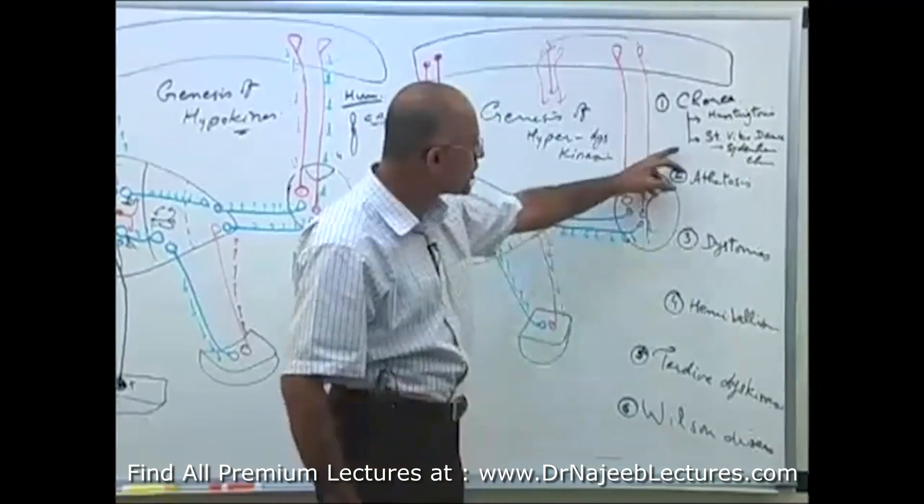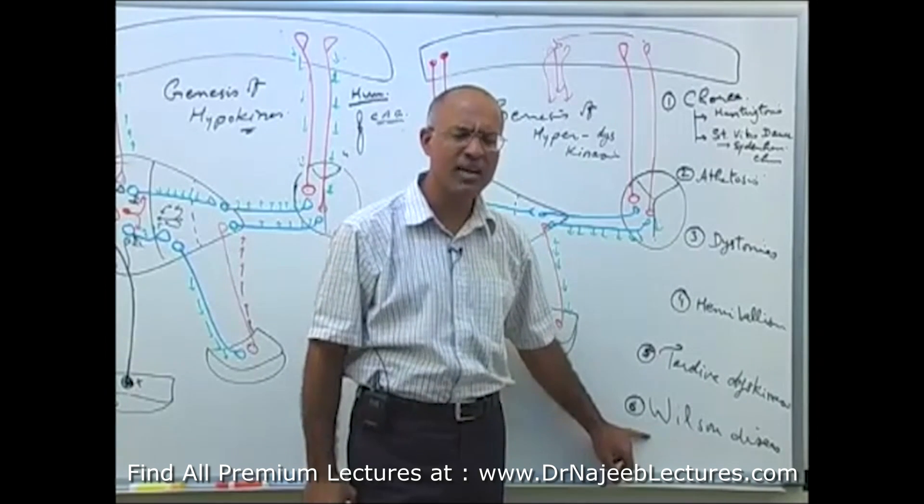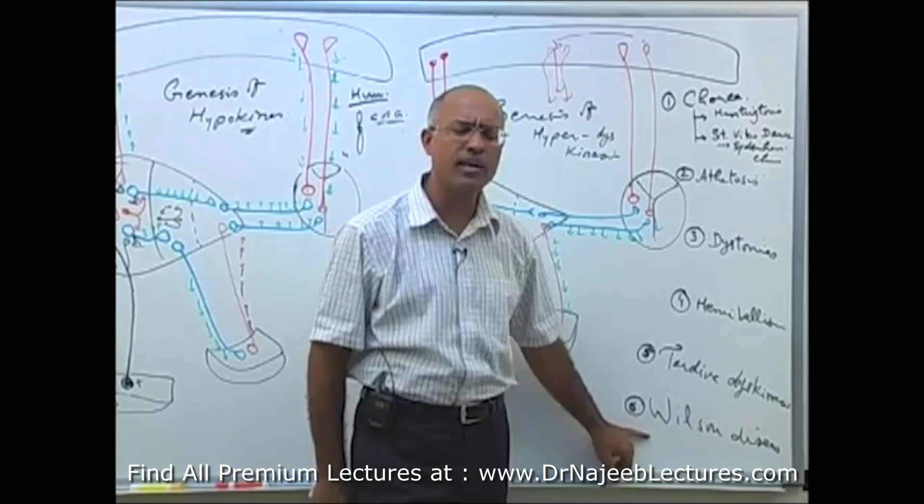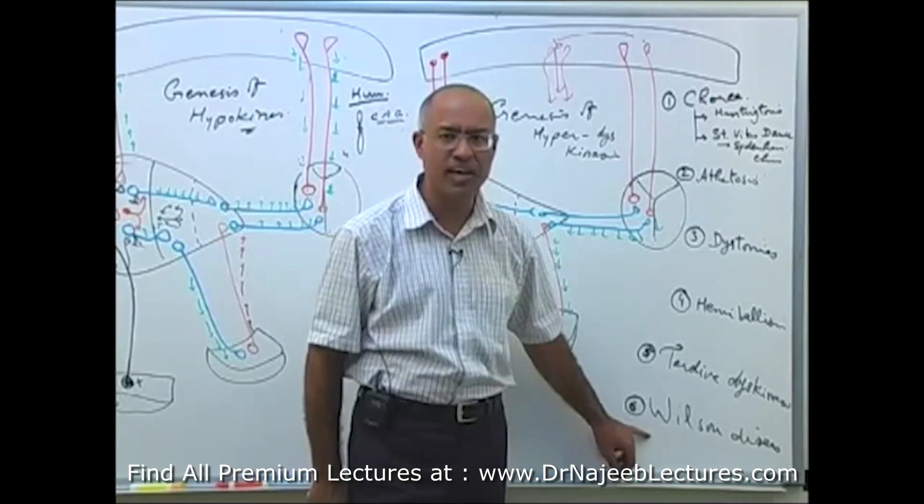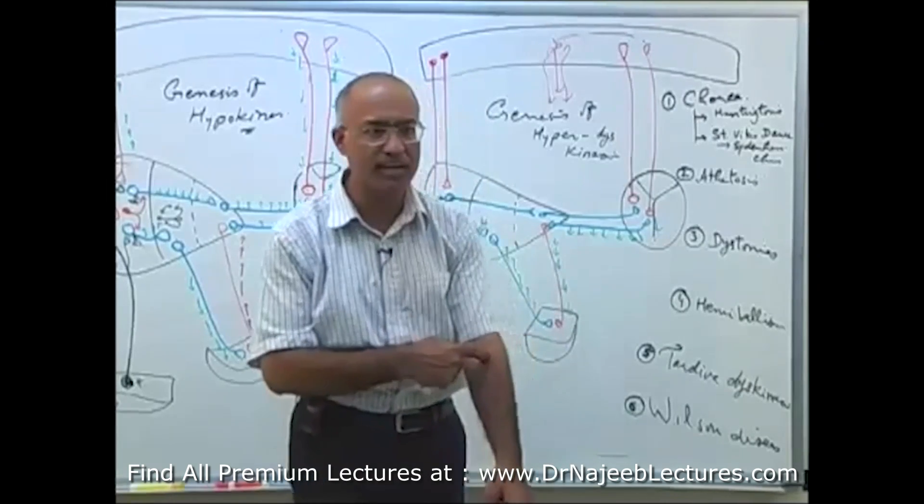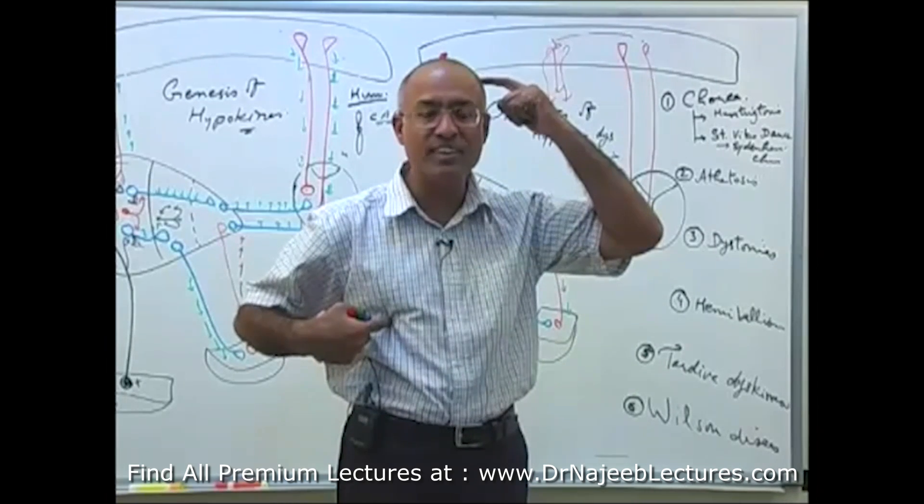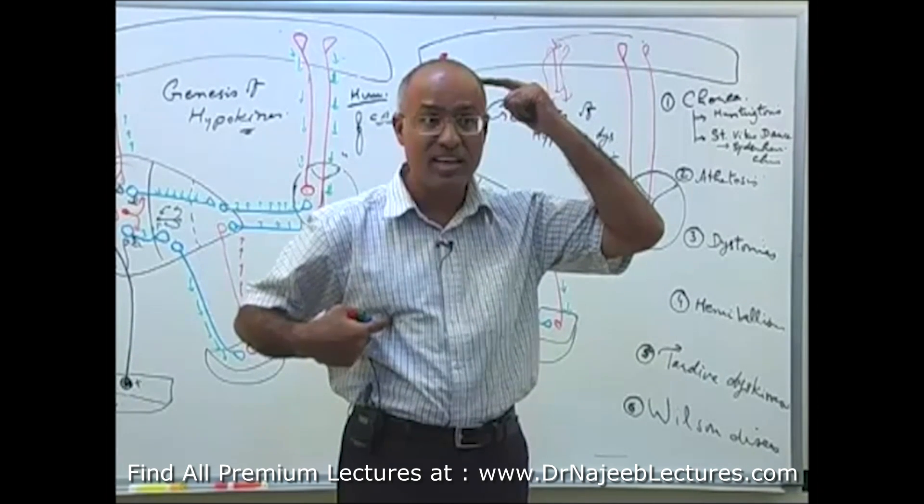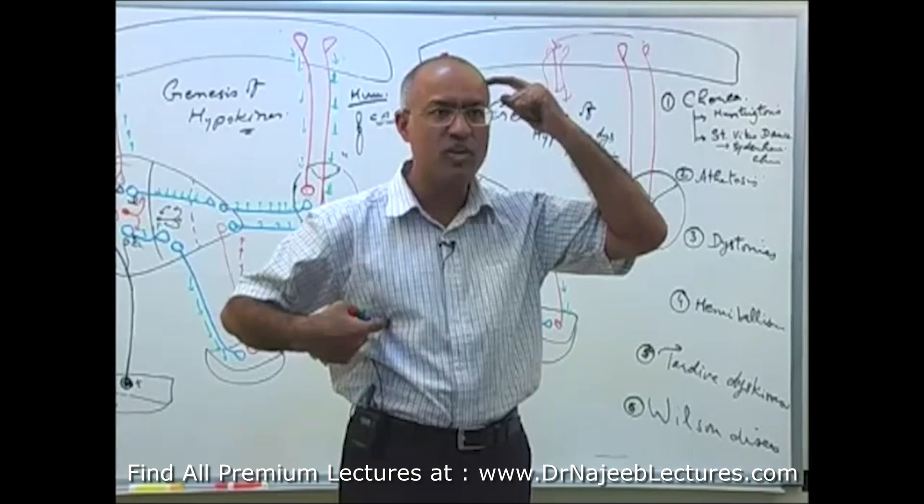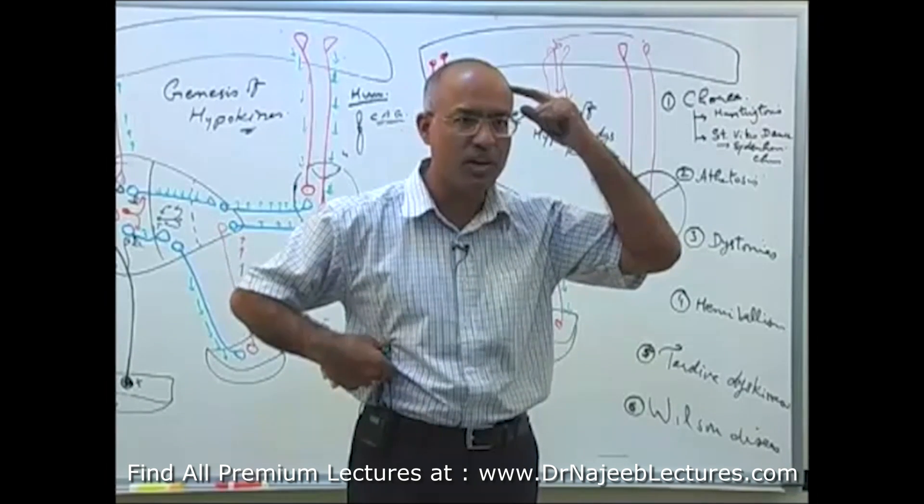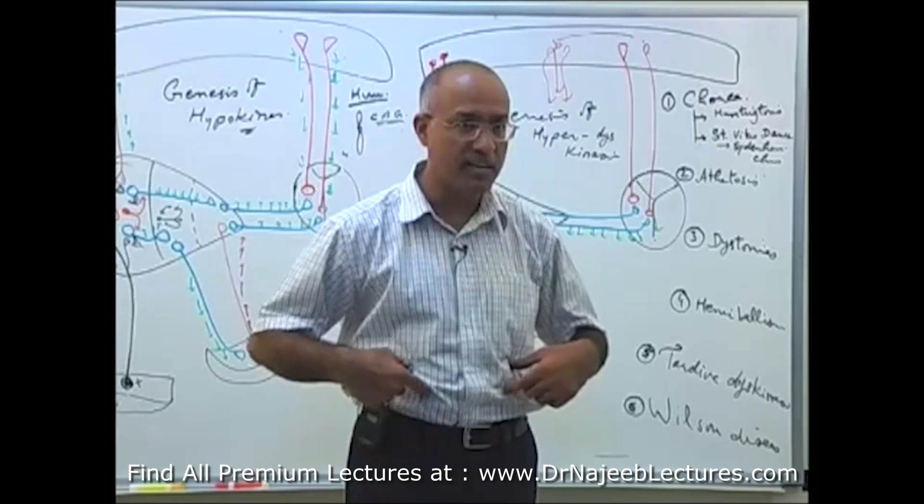Then there is another disease, in which chorea can occur, that is called Wilson disease. In Wilson disease, what happens, that this is inherited disorder of copper metabolism, that there is a protein called ceruloplasmin, ceruloplasmin level is less in the blood, and copper accumulate into liver, and copper accumulate in the cornea, and copper accumulate into caudate nucleus, and lentiform nucleus. So, it damages the liver, and damages the lenticular nucleus, so we call it, hepatolenticular disease, or Wilson disease, it is copper overloading disease.